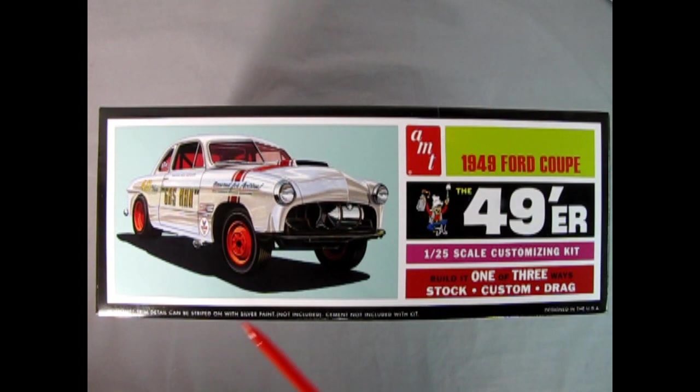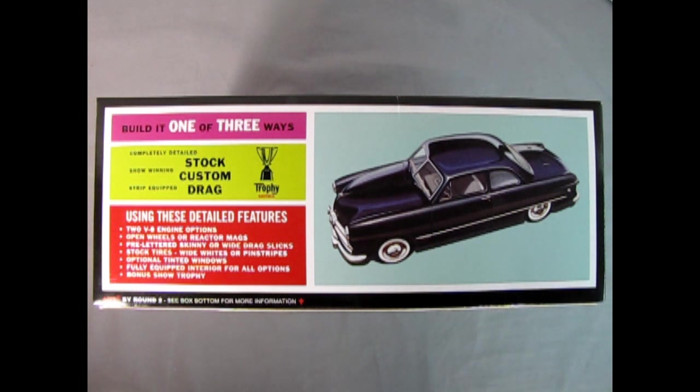On this side of the box we see the Gas Man, which is a drag racing build option for this model kit. Turning the box to this side, we see the factory stock version of the 1949 Ford. This car was all new for Ford and had a redesigned chassis and suspension. That suspension eliminated the long-used Model T transversely mounted semi-elliptical springs with a conventional independent front suspension and dual rear leaf springs.